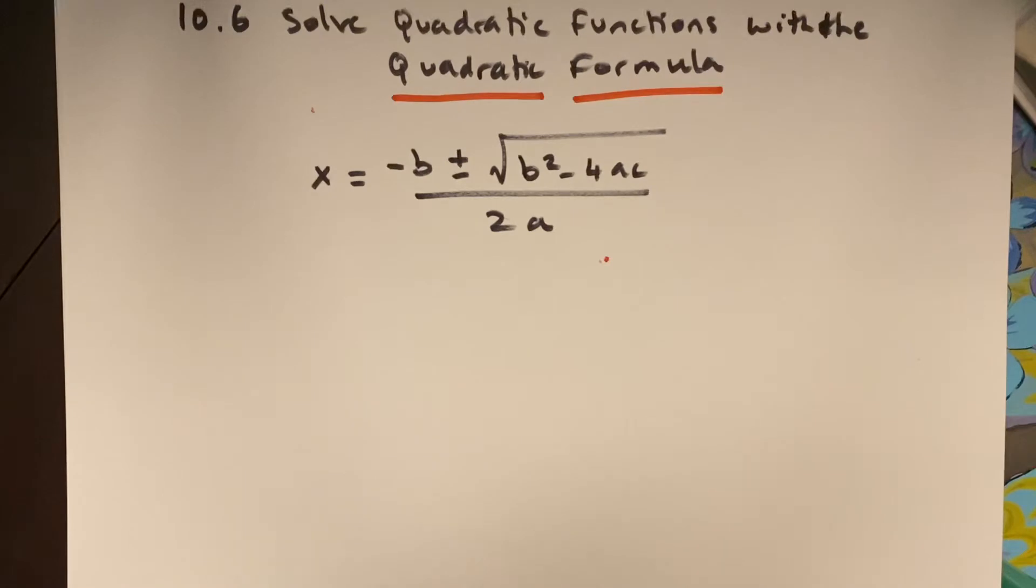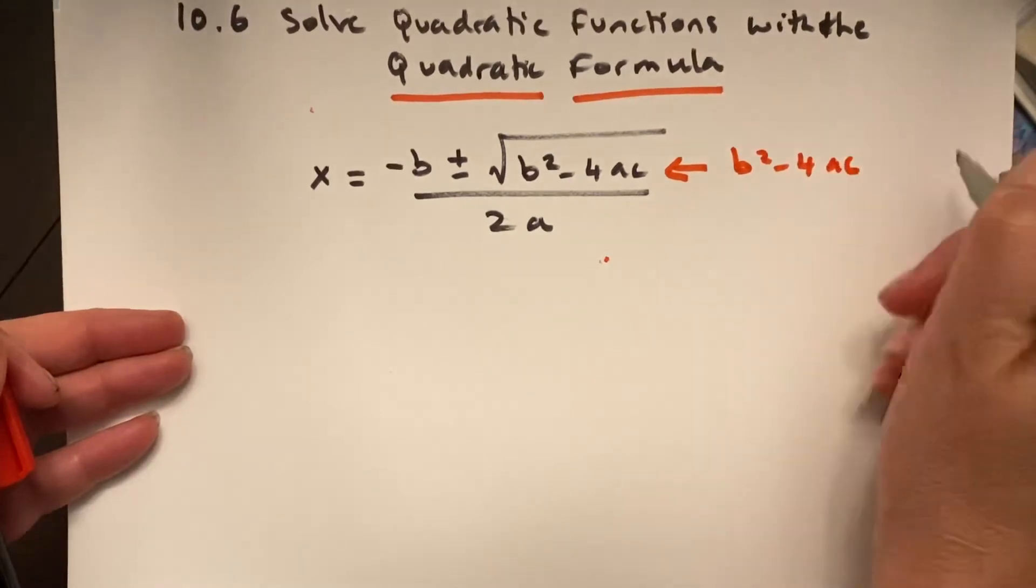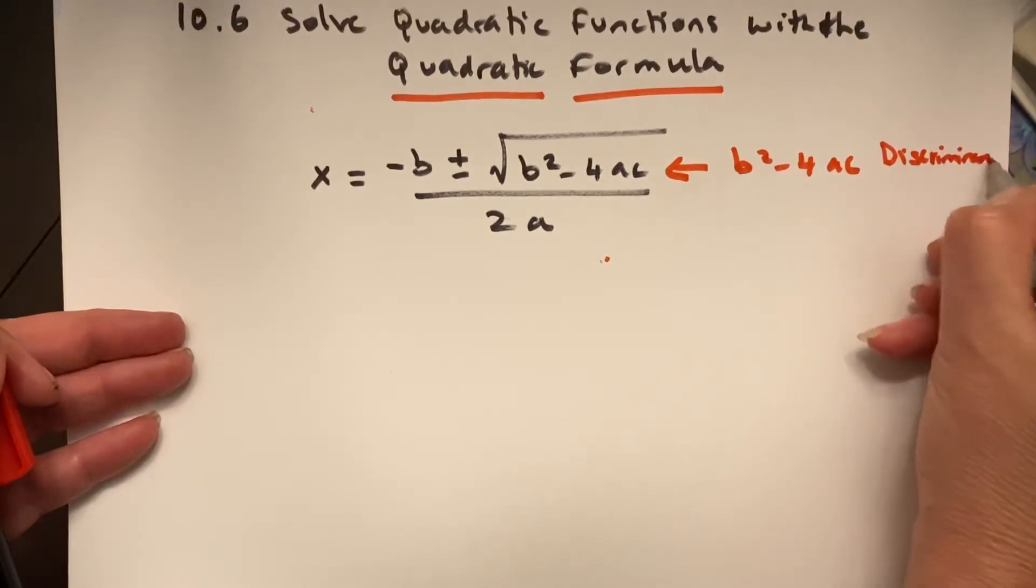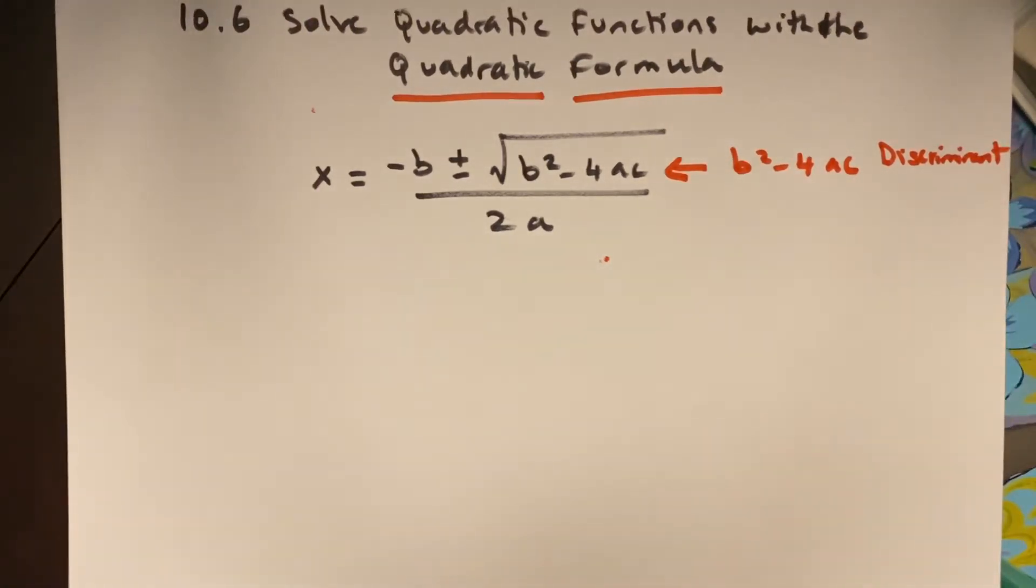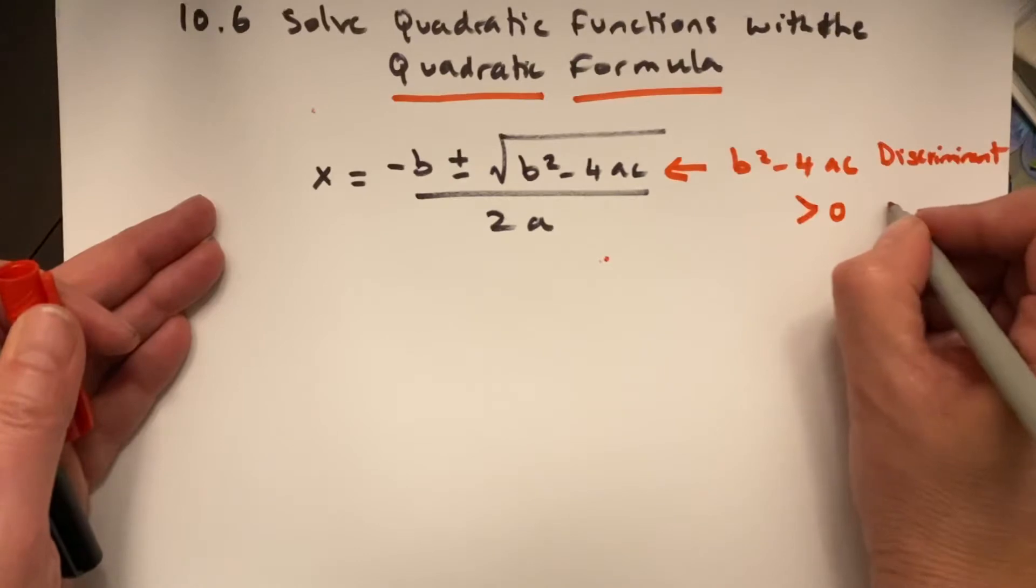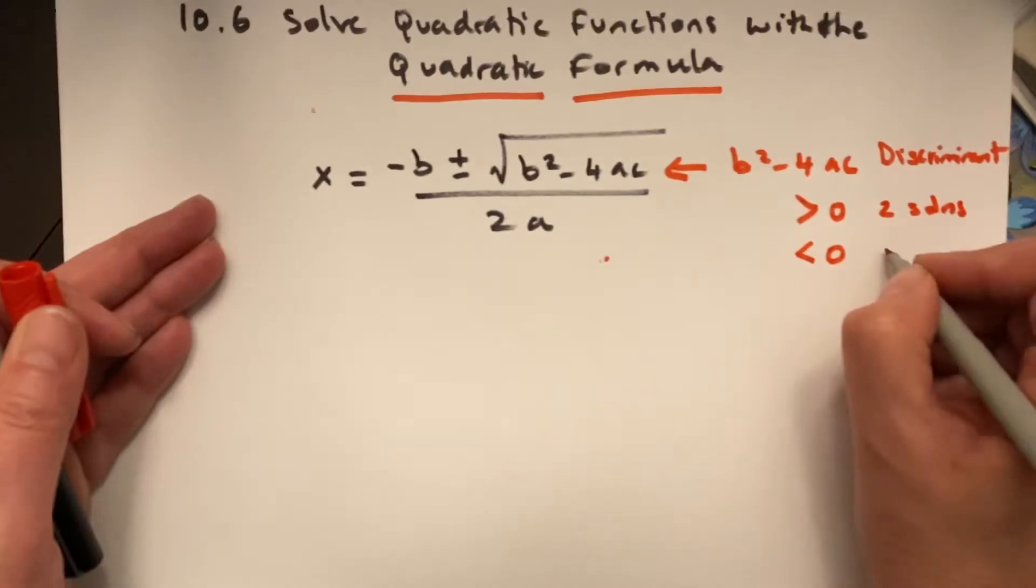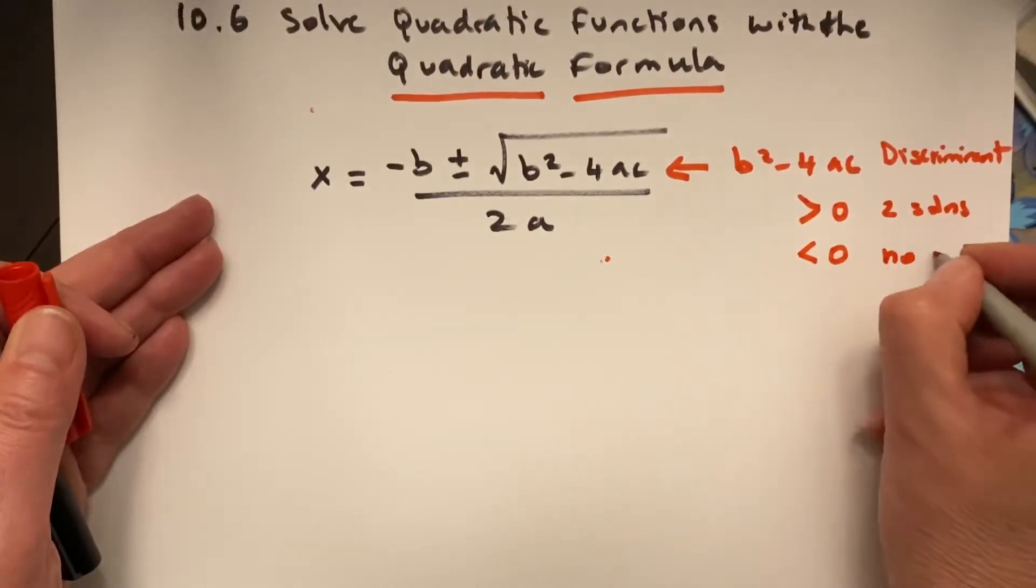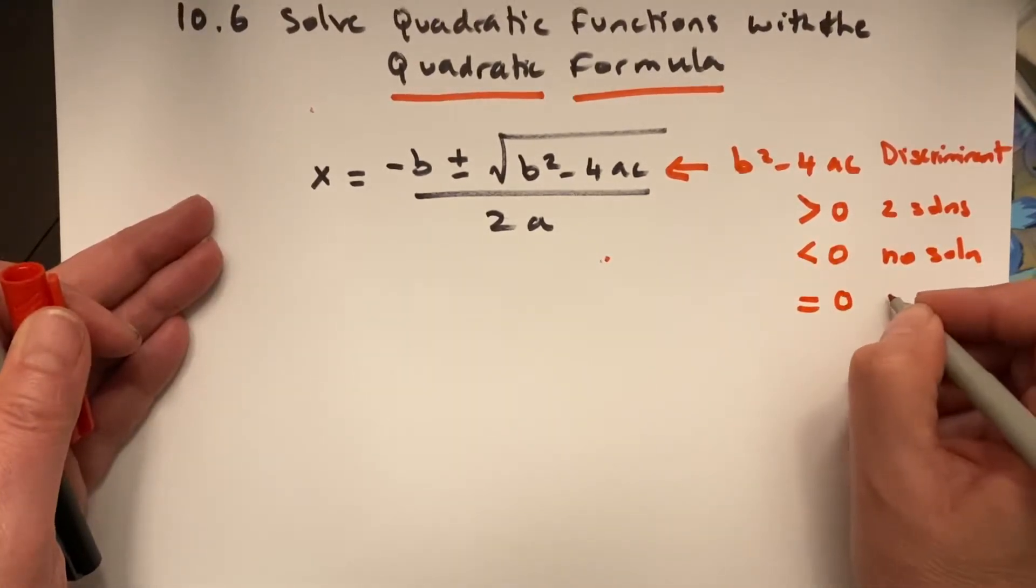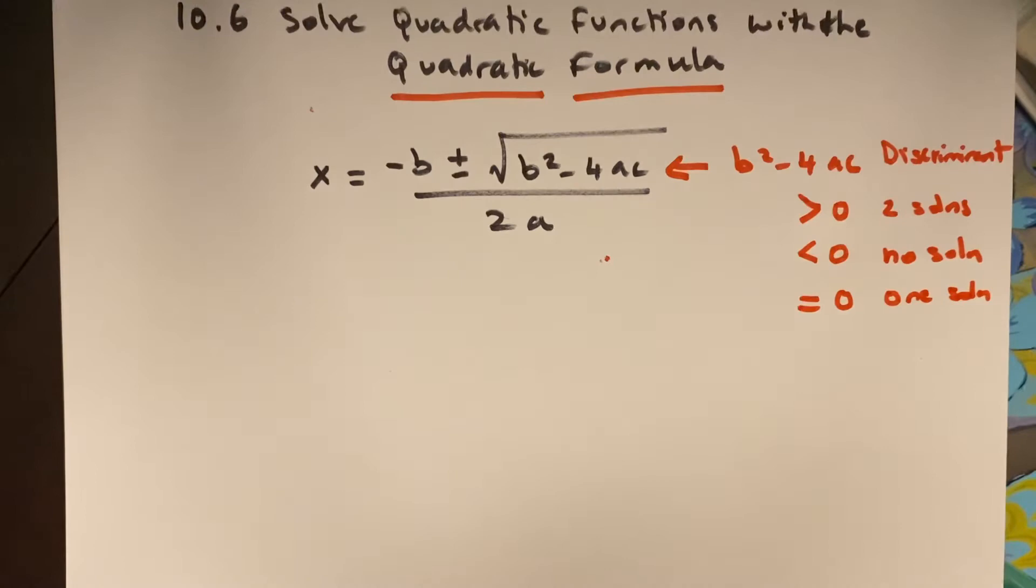And you'll remember that this portion, this is from 10.7, b squared minus 4ac, is called the discriminant. And the discriminant, if it's greater than 0, tells you there's two solutions. And if it's less than 0, means there's no solution. In other words, nothing is intercepting that axis. And if it's equal to 0, means there's one solution, meaning that the vertex is literally on that axis.